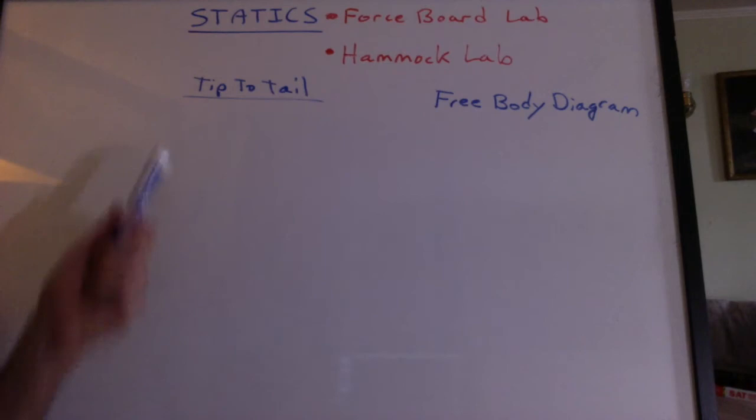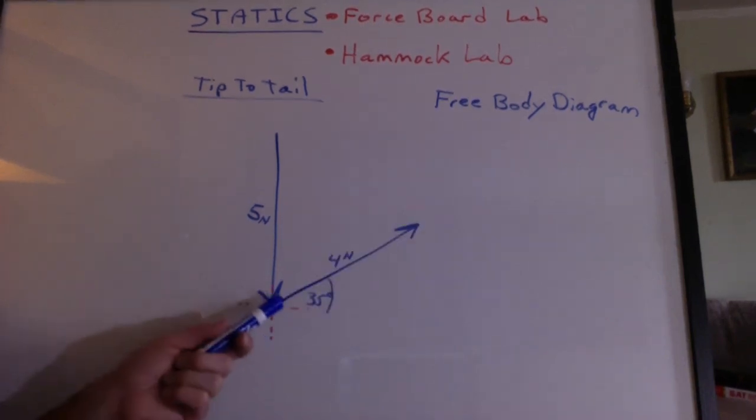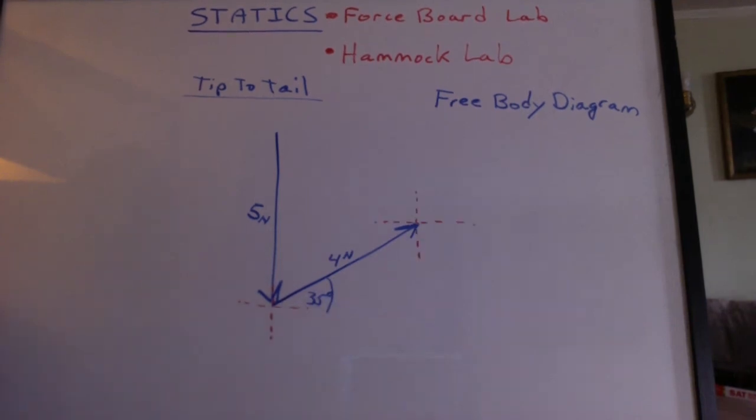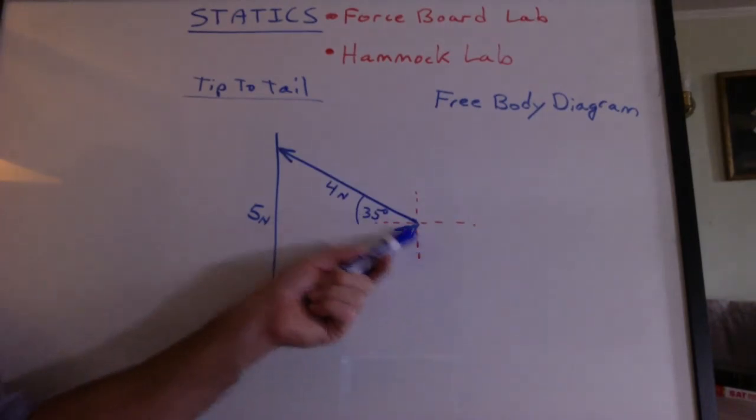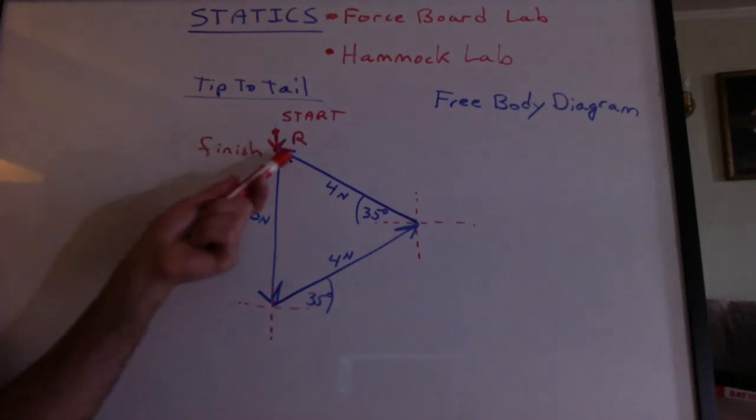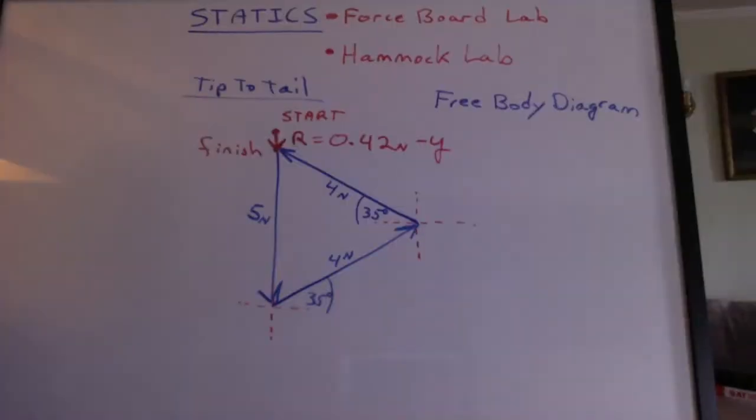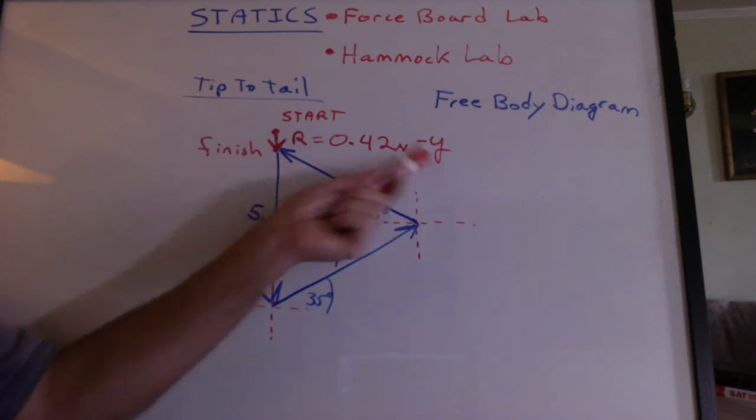What if we wanted to draw those vectors tip to tail? Using a ruler and a scale, I'll draw 5 newtons going down. I'll put in my coordinate system. I'll measure with my protractor 35 degrees, use my scale, and draw 4 newtons. I'll put in another coordinate system. I'll measure 35 degrees with my protractor, use my ruler, draw out another 4 newtons, and I'll see where I end up. There's the start, and there's the finish. So my resultant would go from start to finish, and you can see it's going to be very small. It should be about 0.4 newtons down, negative y.